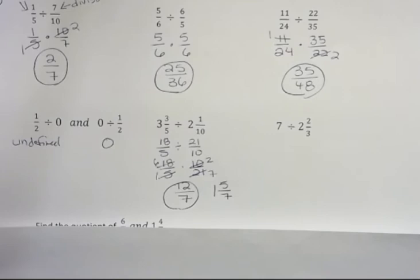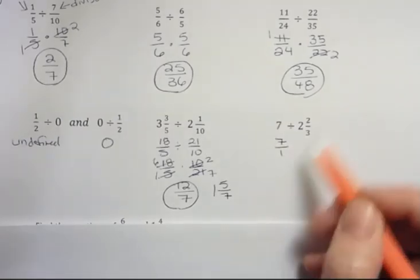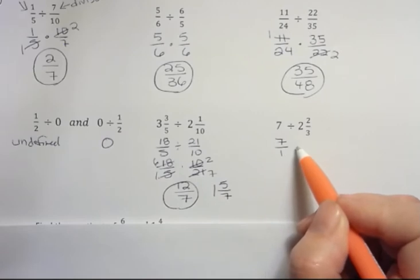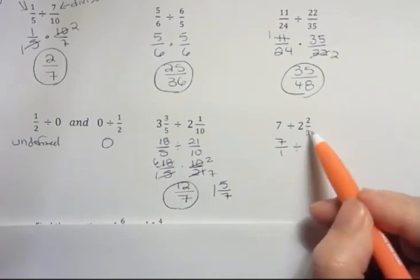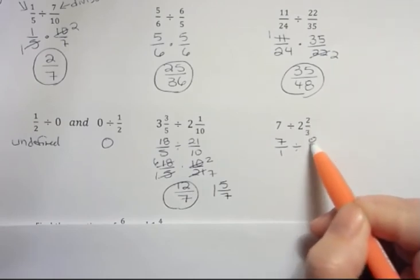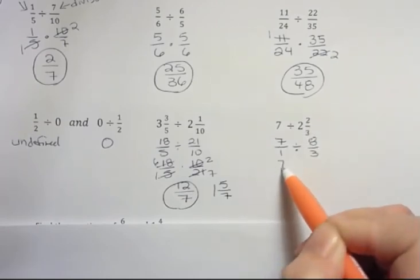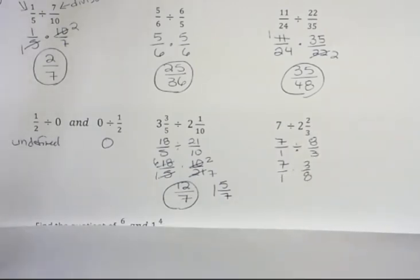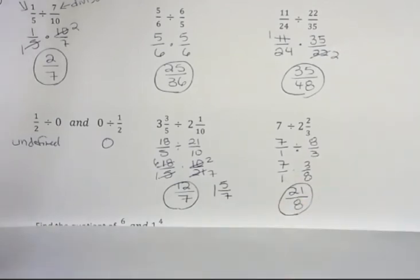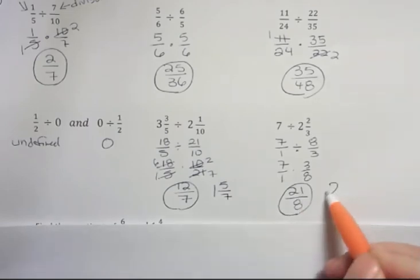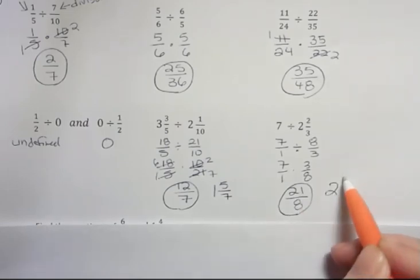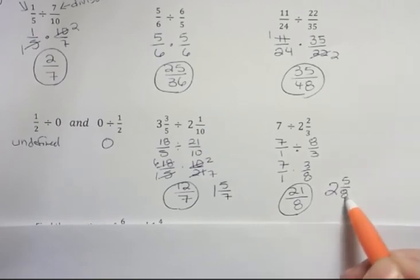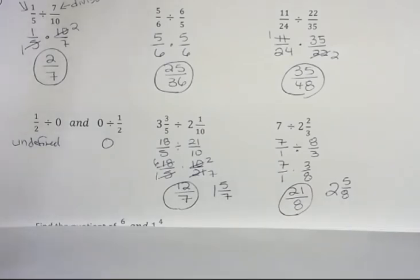Here what I would do is I would make 7 into 7 over 1 so it's a fraction, an improper fraction. And then I would still leave the division symbol. 2 times 3 is 6 plus 2 is 8. And now I'm going to multiply by the reciprocal of the divisor. Notice there's nothing to cross-cancel here. 3 times 7 is 21. 1 times 8 is 8. That's going to be my final answer. I could change that into a mixed number if I wanted to. 8 goes into 21 twice. 2 times 8 is 16. That means there's 5 left over.